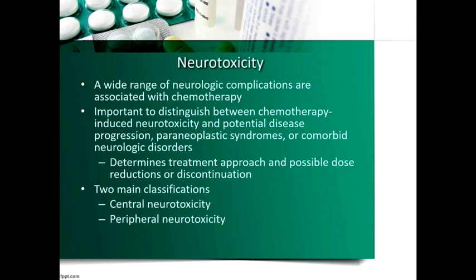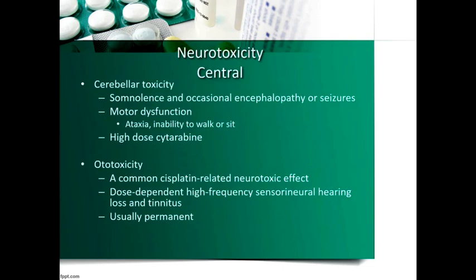The two major classifications are central neurotoxins and peripheral neurotoxicity. For central, we have cerebellar toxicity, which results from high-dose cytarabine — anything over two to three grams per meter squared. This is seen mainly with leukemias. It can lead to encephalopathy, potentially seizures, and motor dysfunction — symptomatic manifestations that are not always common but something we watch for.